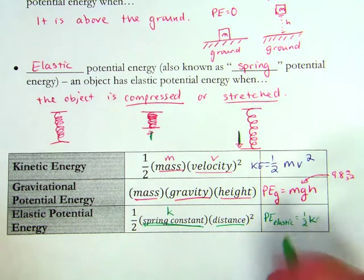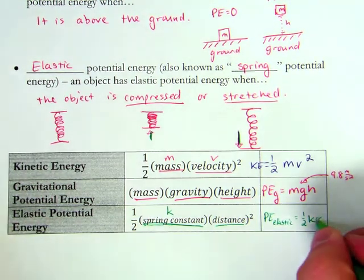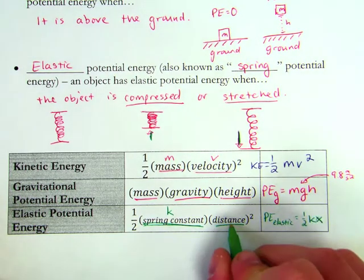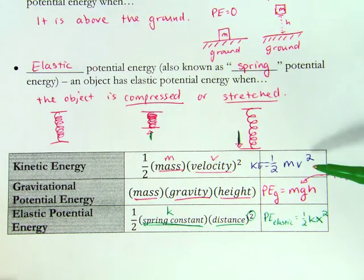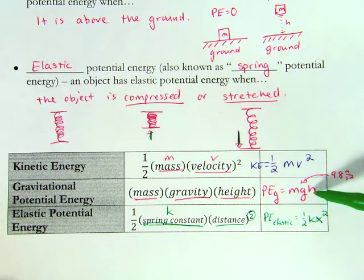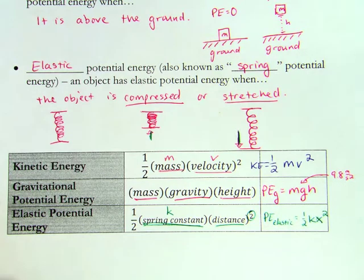So rather than using d, which we usually think of as talking about how far two objects are away from each other, we're going to pick x, which tells us how far an object is stretched, and it's going to be squared. So here's my three formulas. Kinetic energy is 1/2 mv squared. Potential energy due to gravity is mgh. And potential energy of the elastic object is 1/2 kx squared.